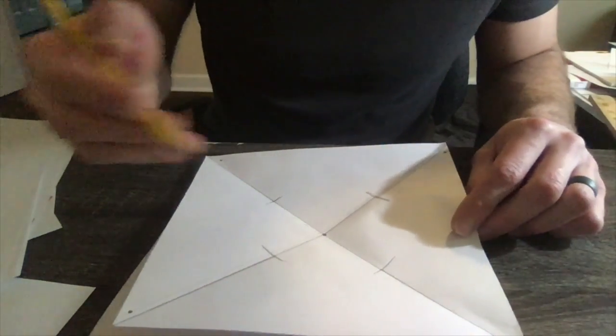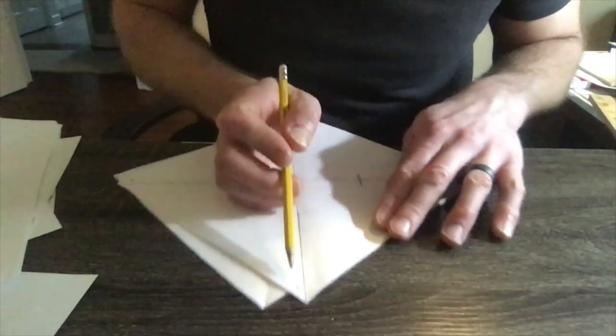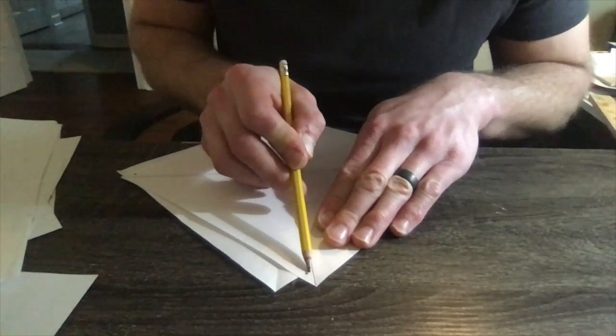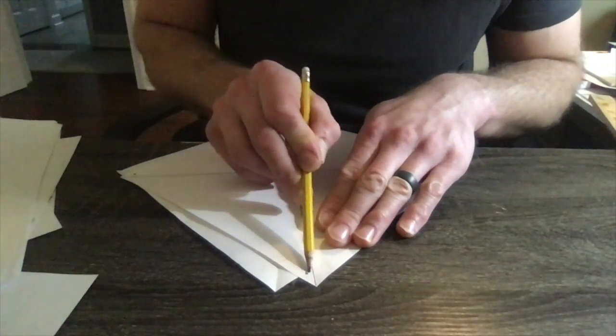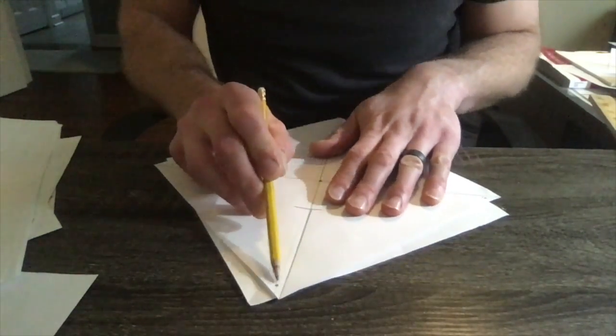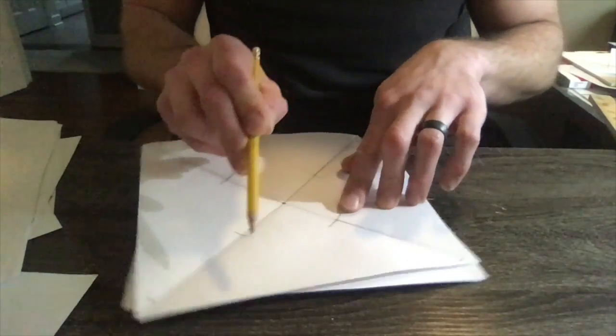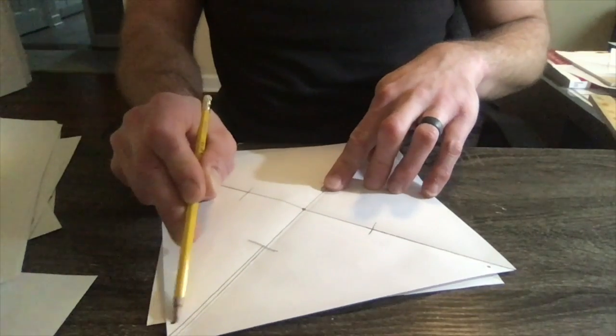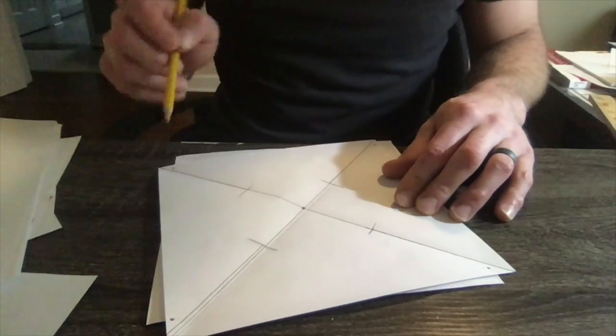I forgot to mention you will draw a dot in every corner of every triangle. One dot per triangle. Here's my dot for this triangle. Here's my dot. Here's my dot for the next triangle. Here's my dot for the next triangle. And the next triangle. So, four dots. One in each triangle.